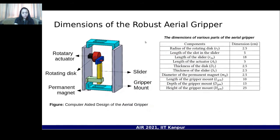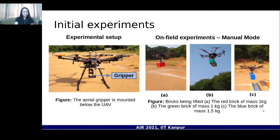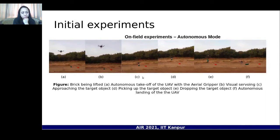After determining disc thickness, simple geometry is used to decide the shape of the enclosure, that is the gripper mount. In initial experiments, the gripper was mounted below a hexacopter and tested on an airfield in both manual and autonomous modes. In manual mode, a red brick of 1 kg, a green brick of 1 kg of different dimensions, and a blue brick of 1.5 kg were lifted. In autonomous mode, the UAV took off, performed visual surveying, approached the target, picked it up, dropped it, and landed — demonstrating the gripper's efficiency.